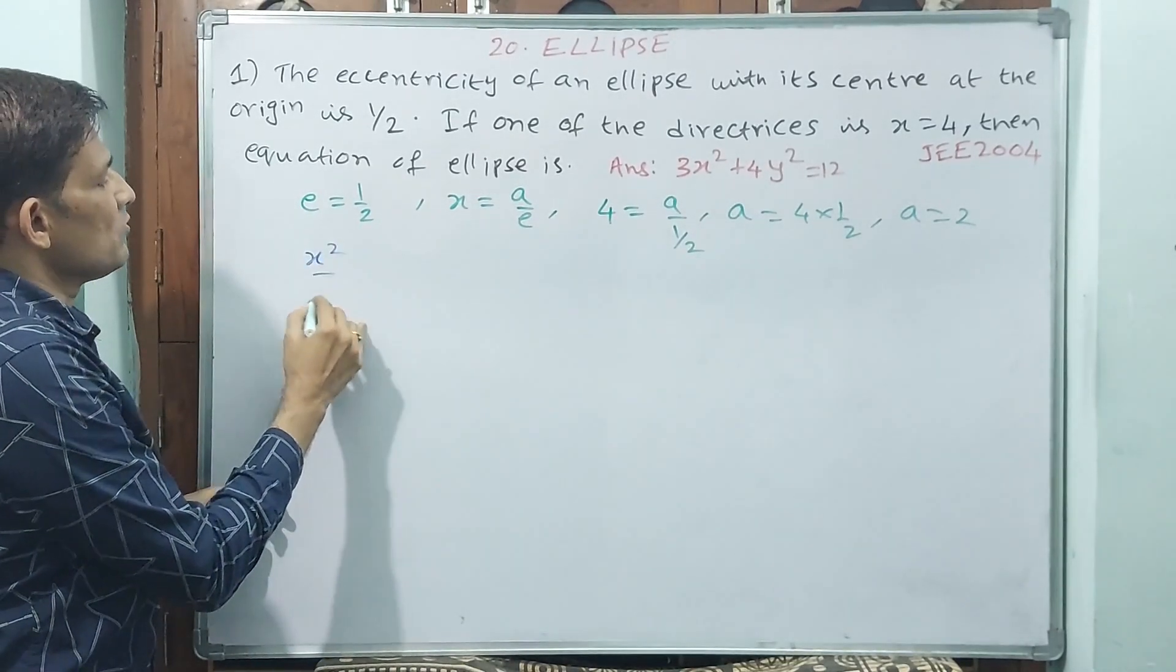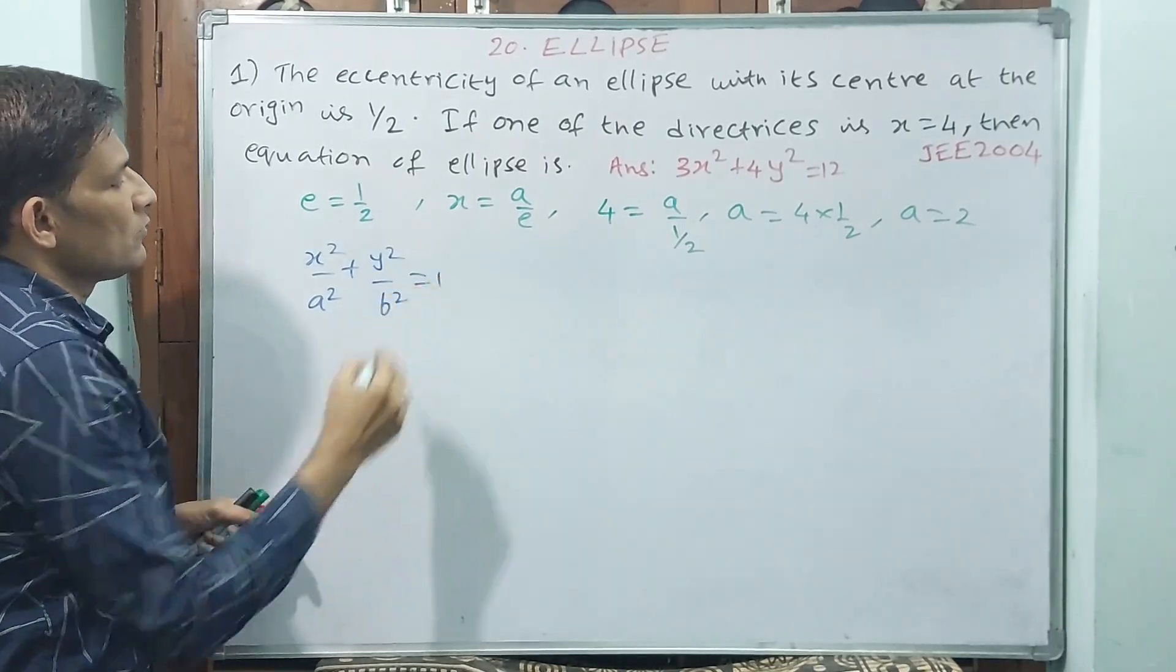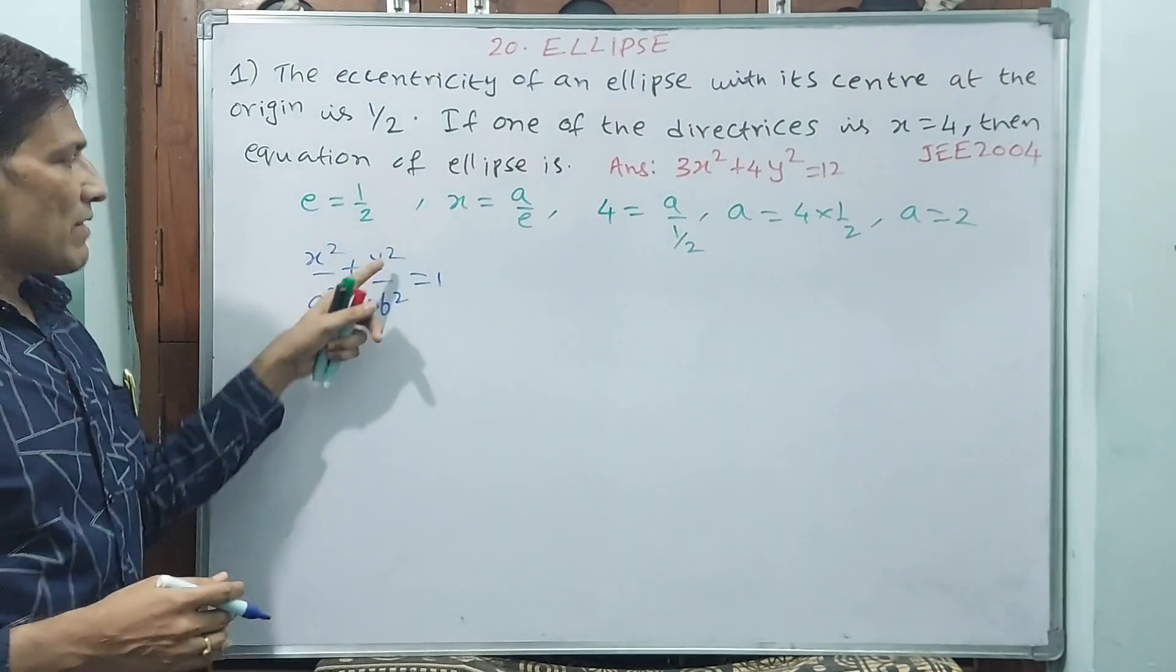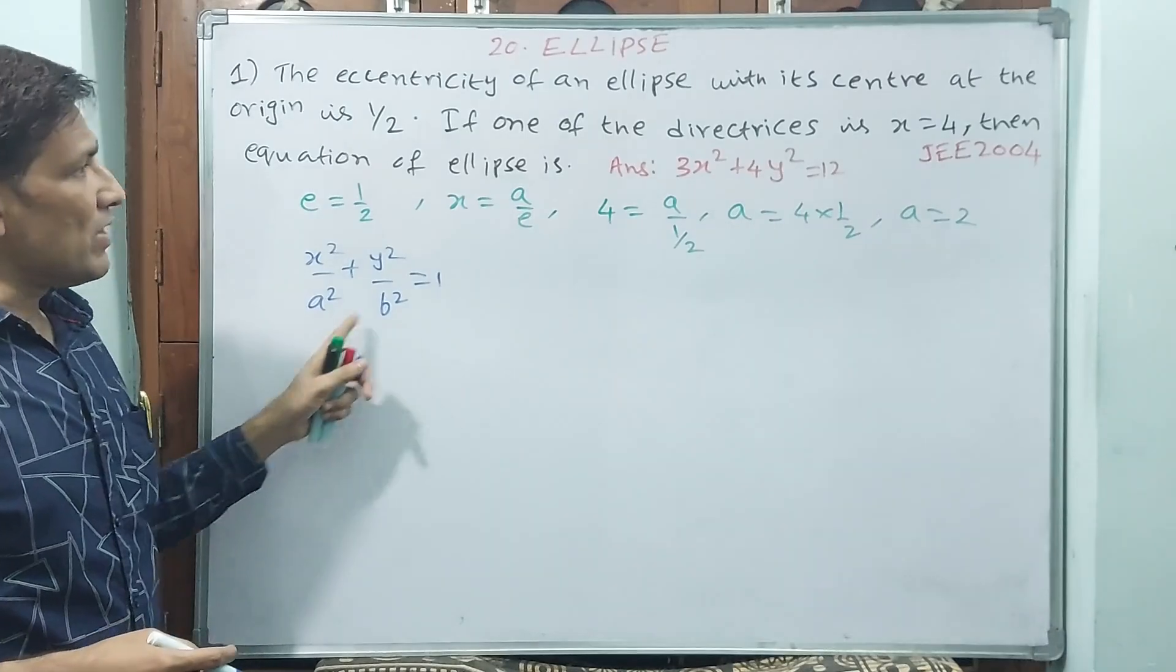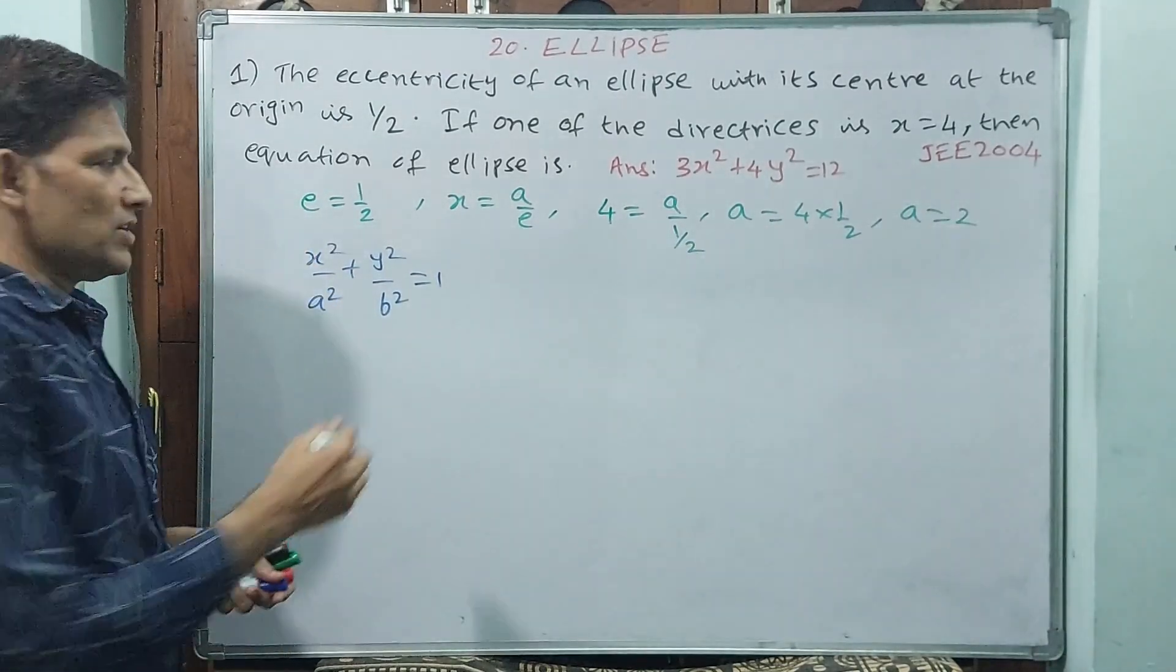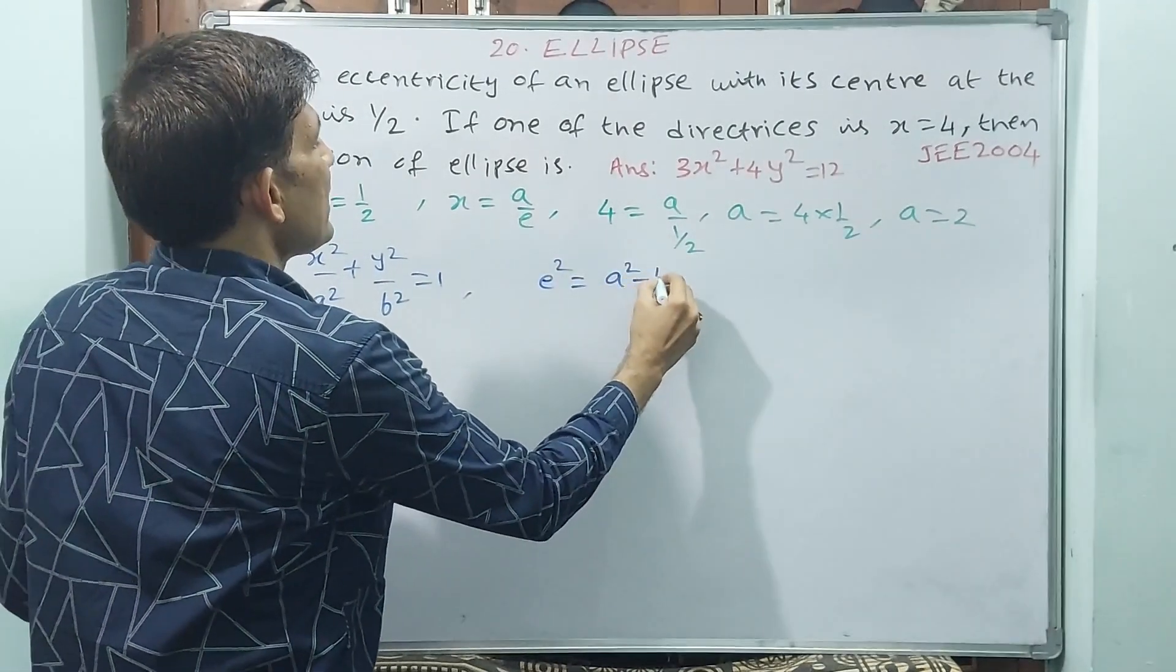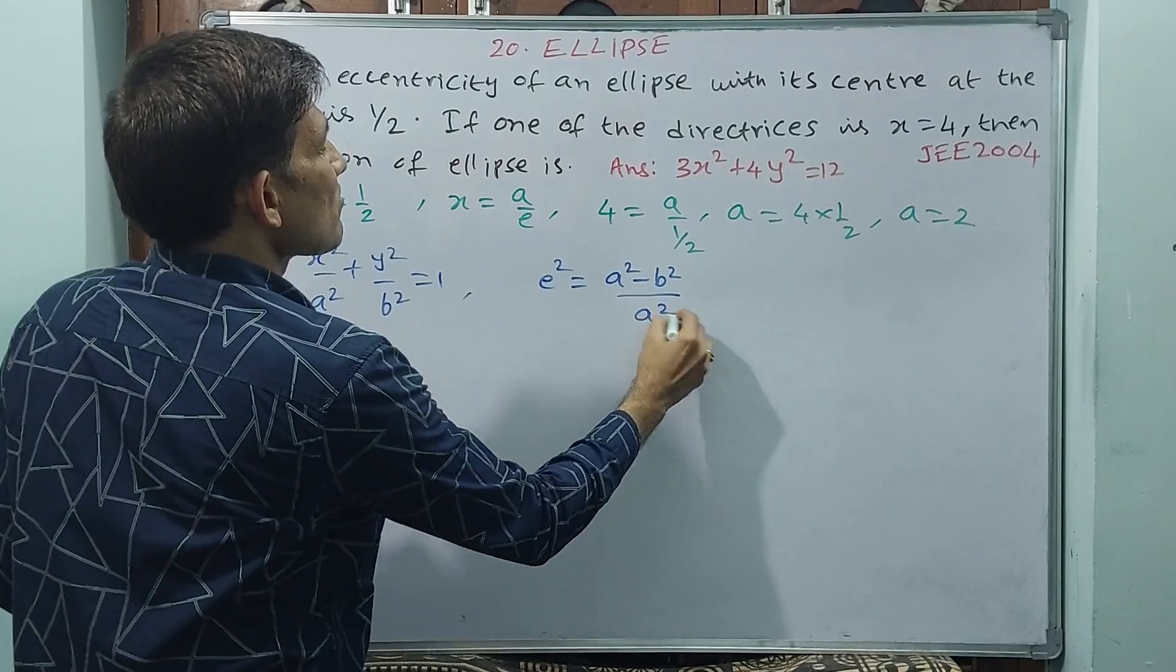Equation of ellipse: x²/a² plus y²/b² equals 1. See, a²/a² is okay for equation, but a² you know, what about b²? Yes, formula is there. See what I want to say: e² equals (a² minus b²) by a².